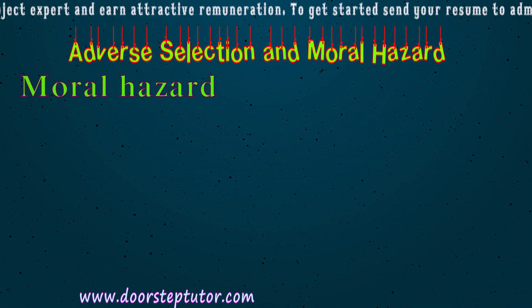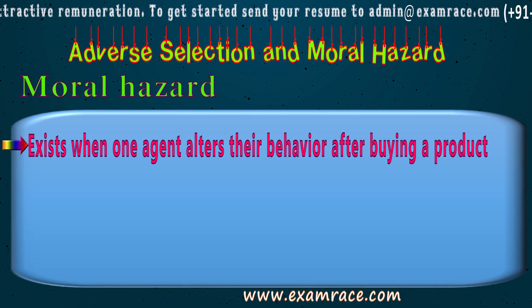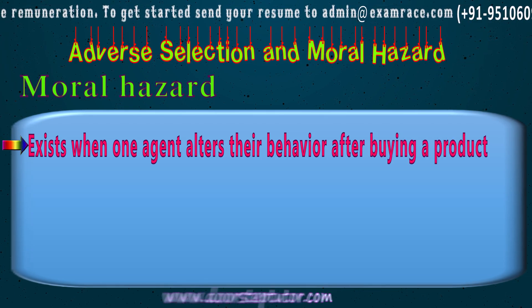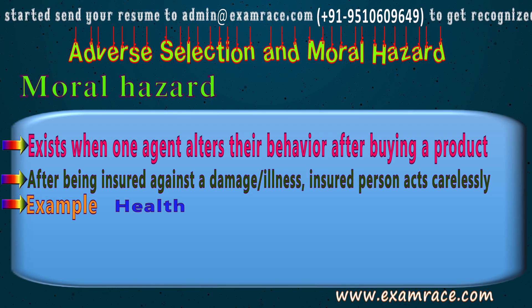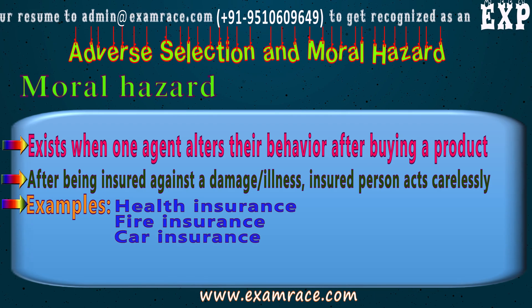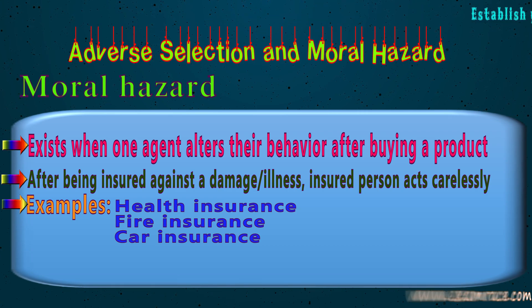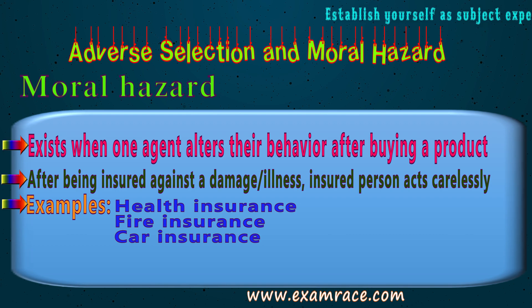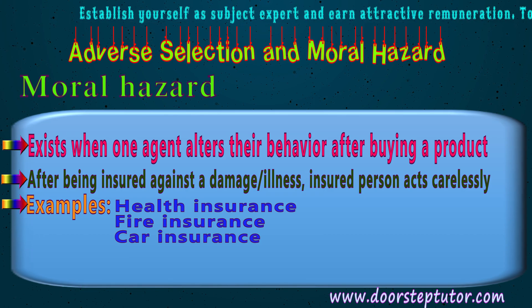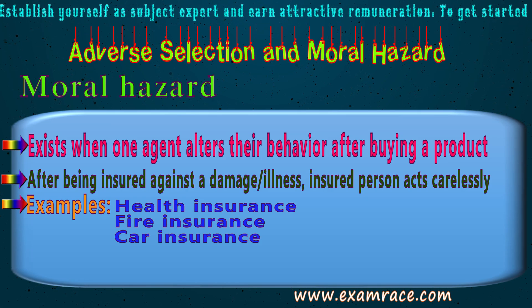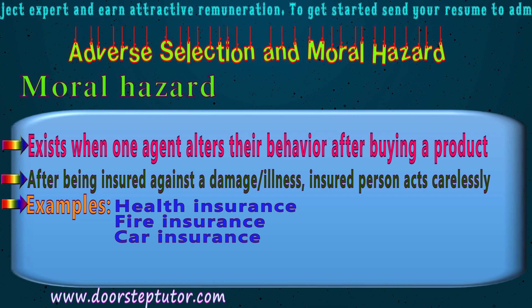Moral hazard is different from adverse selection. It occurs when a party changes or alters their behavior after buying a certain product. For example, a person who has car insurance may act irresponsibly while driving because they know that the cost of any damage or accident will be borne by the insurance company — they don't have to bear the cost of any casualty.